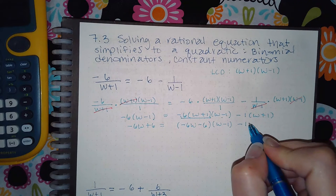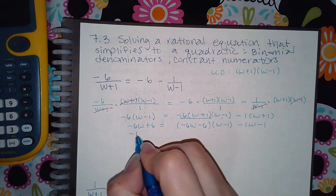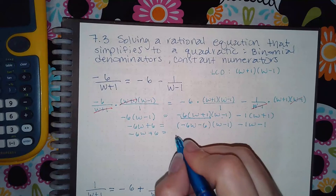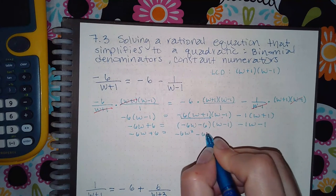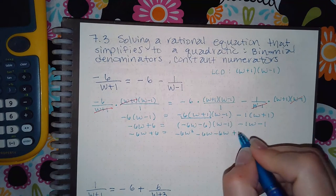Here I get negative 6 times w minus 1. Here I get negative 1w negative 1. So then now I'm going to go ahead and multiply these two binomials. So I get negative 6w squared, negative 6w, negative 6w, and positive 6.